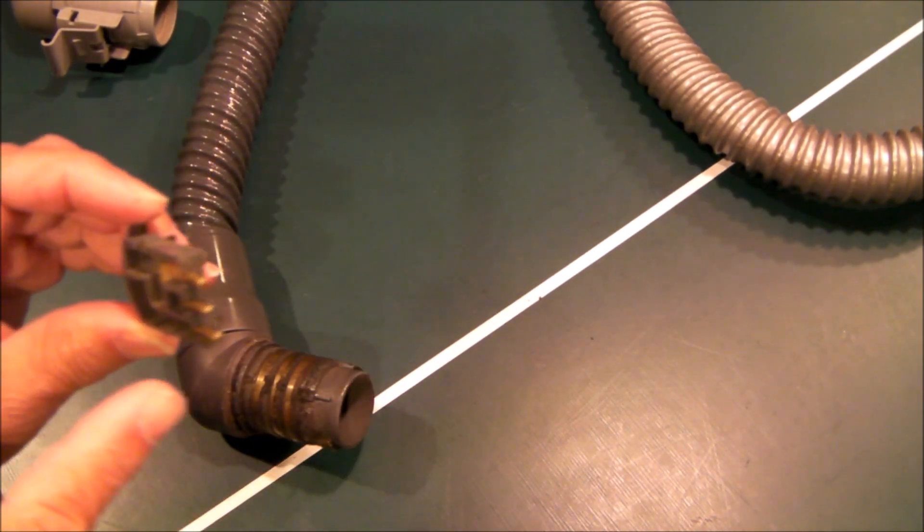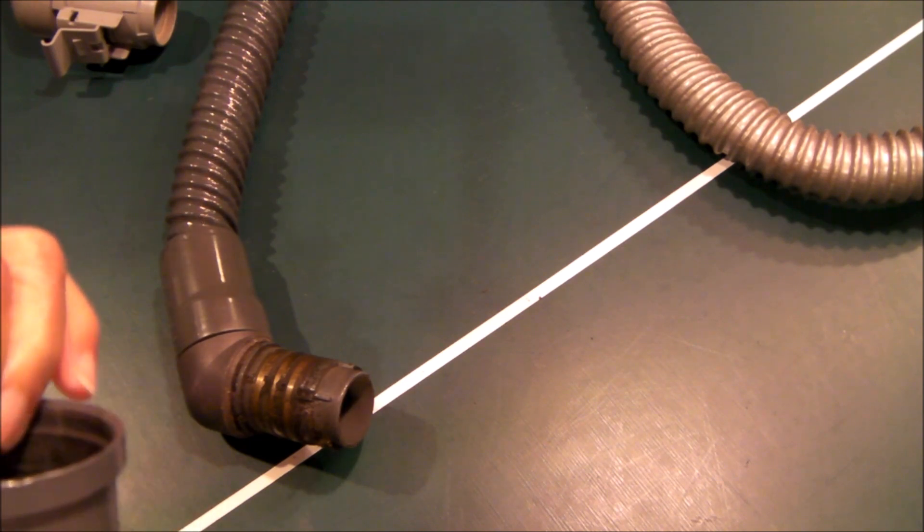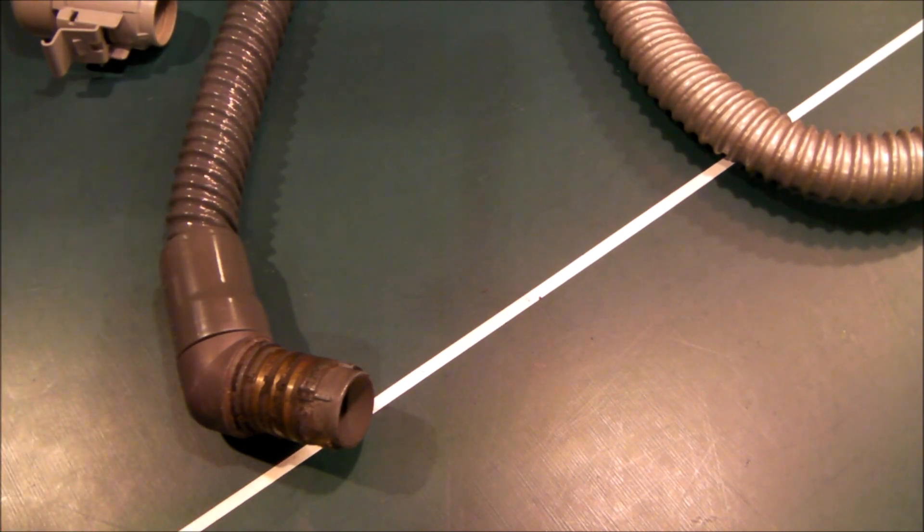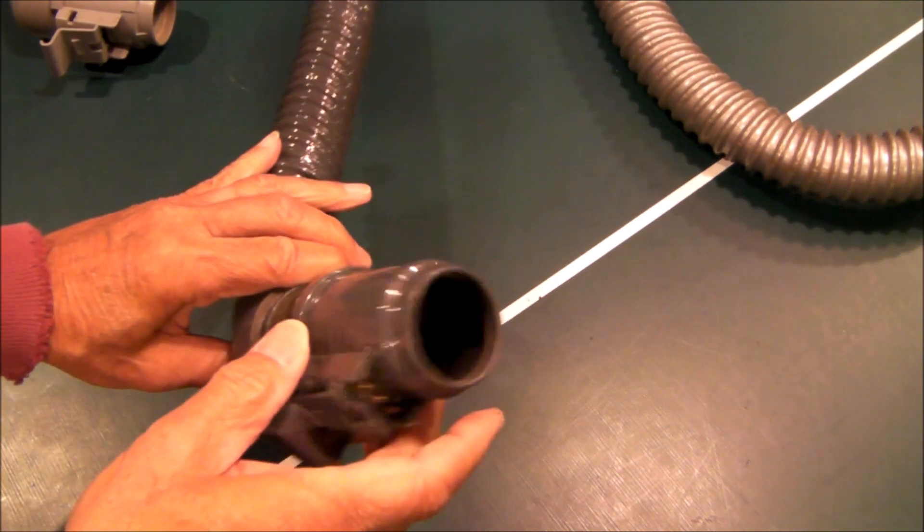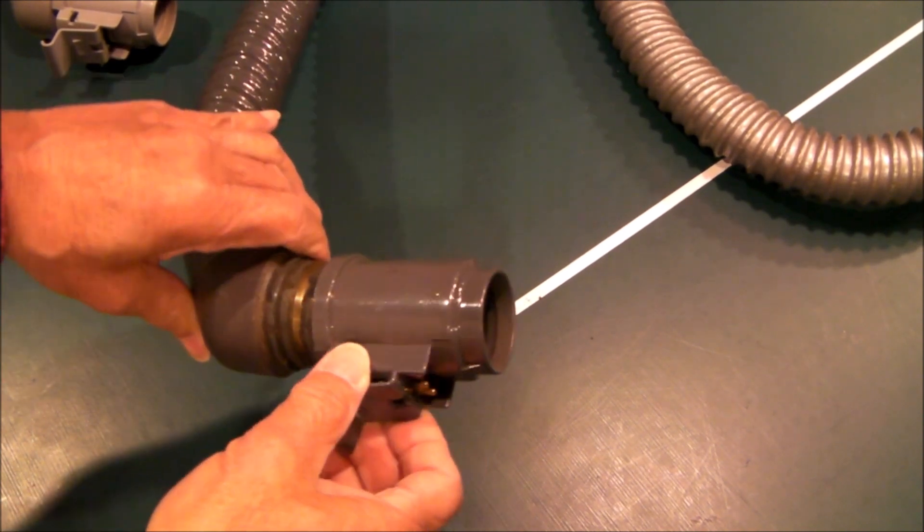Whether you're using the three prong or the two prong version, the disassembly is exactly the same. So let me reassemble this for you, and I'm going to leave it off of the hose because it's easier to demonstrate. So when the hose cuff is on, this swivels, and how do you release it?